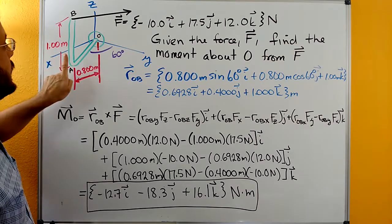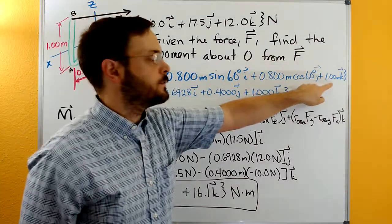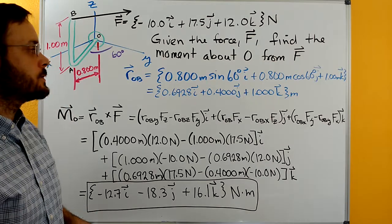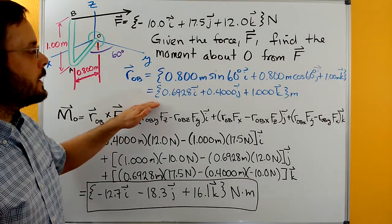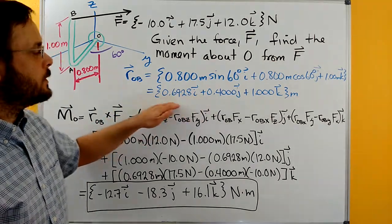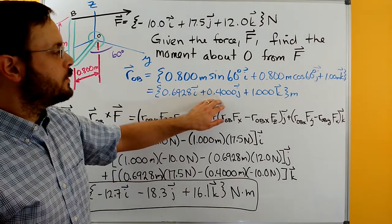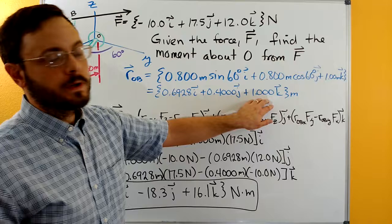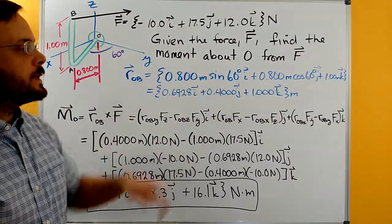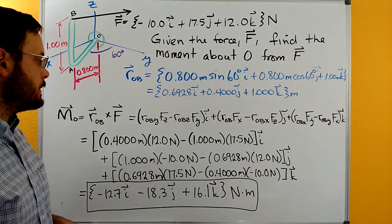and then 1 meter up in the positive k direction or z direction. Just going through and calculating out the numbers we'll get 0.6928i plus 0.4j plus 1k. I'm going to keep a few extra decimals here and then I'll round off at the very end.